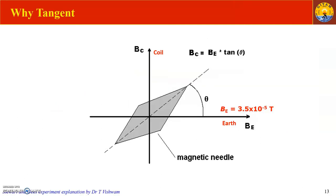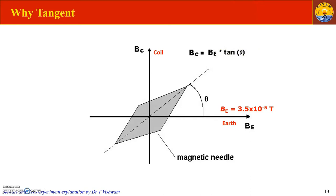The tangent law is used because the earth's magnetic field acts in one direction and the field produced by the coil acts perpendicular to it. The resultant is calculated using: BC = BE · tan θ, where BE is the earth's magnetic field and tan θ gives the resultant deflection angle. This allows us to find the magnetic field produced by the circular coil carrying current.